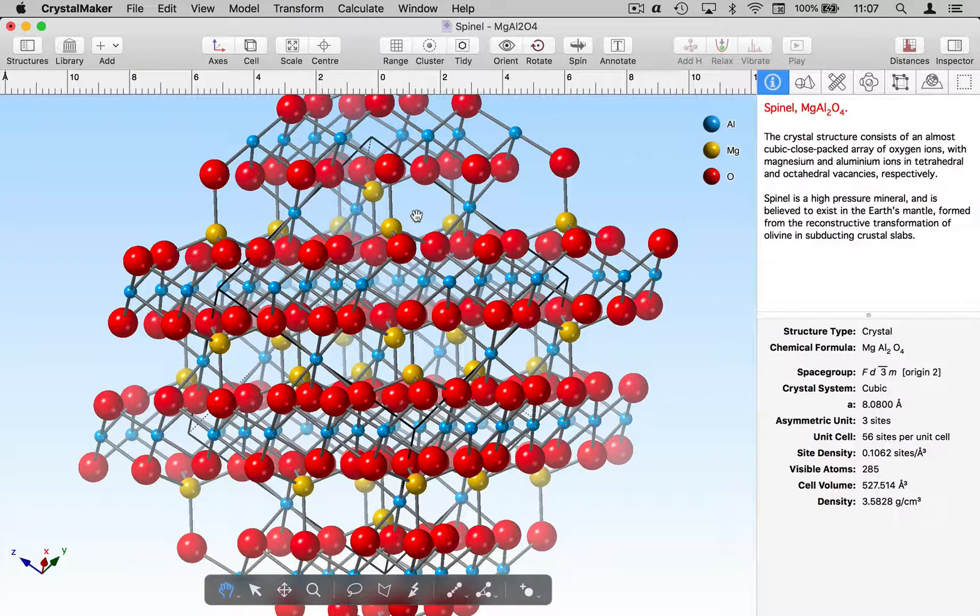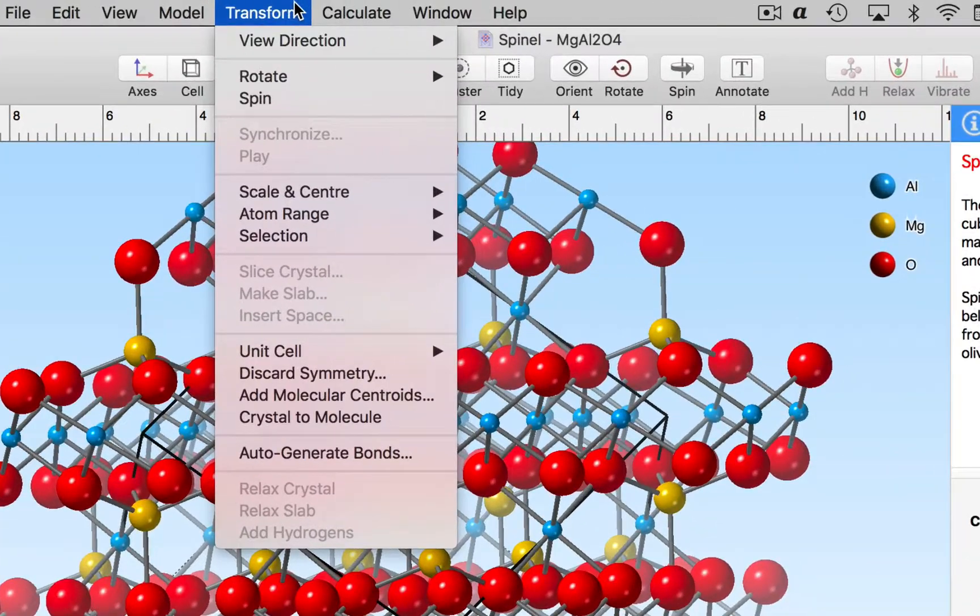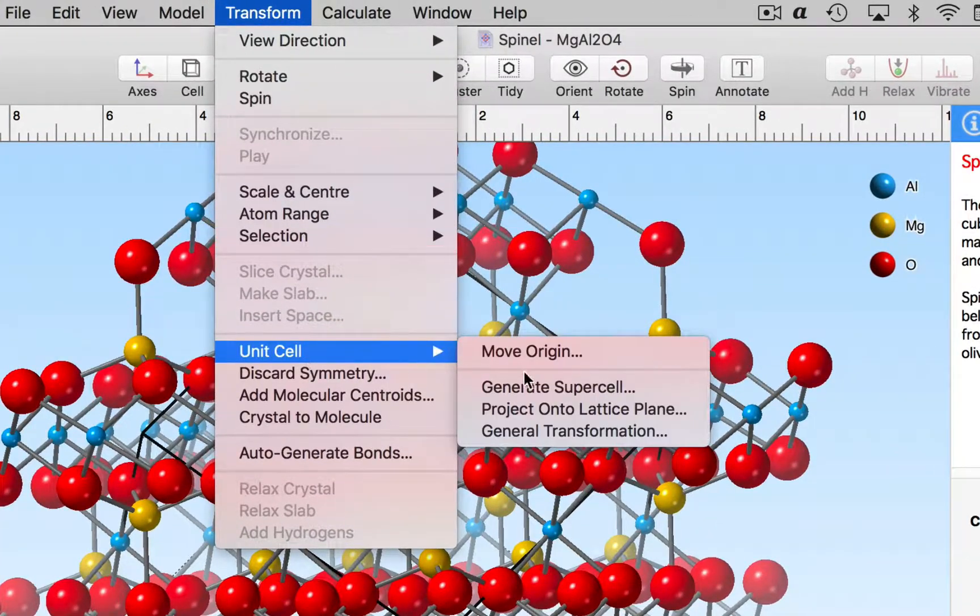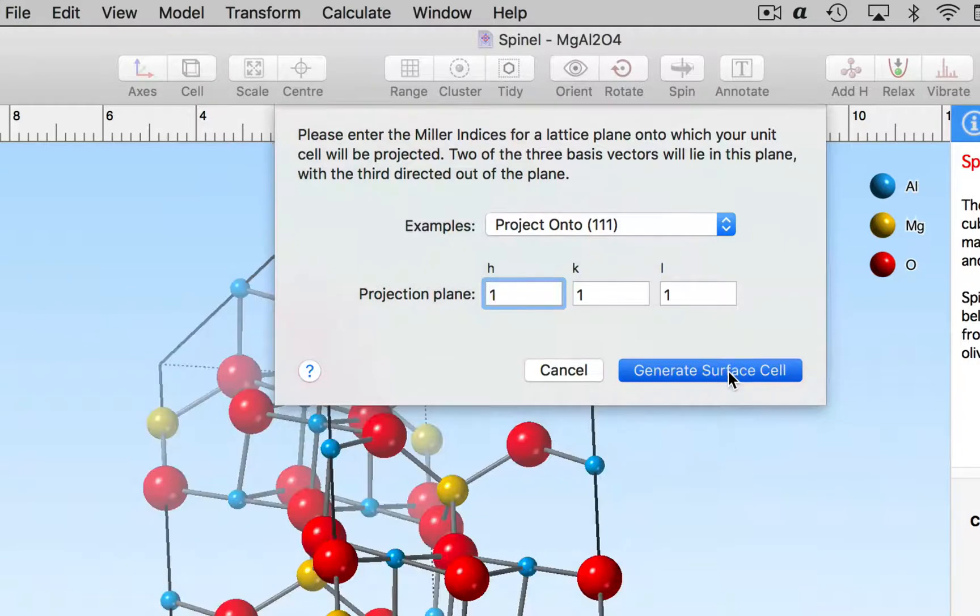Now the first thing I want to do is transform this unit cell from a cube shape to a surface cell where two of the three axes are parallel to those close-packed planes. So I'm going to go up to the transform menu, transform my unit cell and project it onto the 1 1 1 lattice plane. That's going to generate a so-called surface cell.